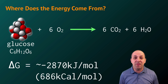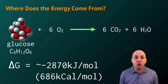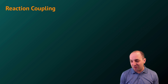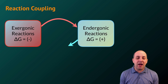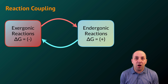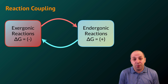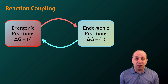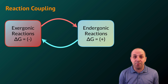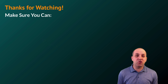We can use the free energy released by exergonic reactions in order to drive endergonic reactions that require an input of free energy, like the synthesis of ATP. We generally refer to this notion as reaction coupling — the idea that exergonic reactions release free energy into the system, and that free energy can then be used by endergonic reactions to drive those processes. It's through the coupling of these two types of reactions that we get the kinds of efficiencies in the energetics that drive our metabolisms in biological systems.